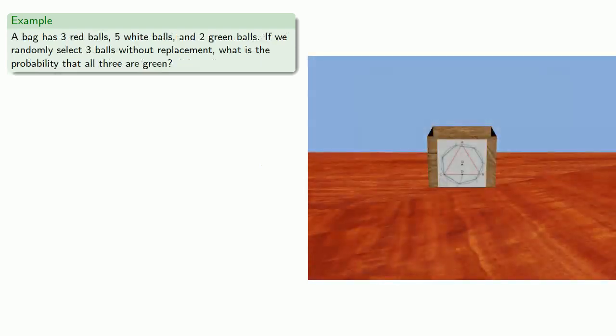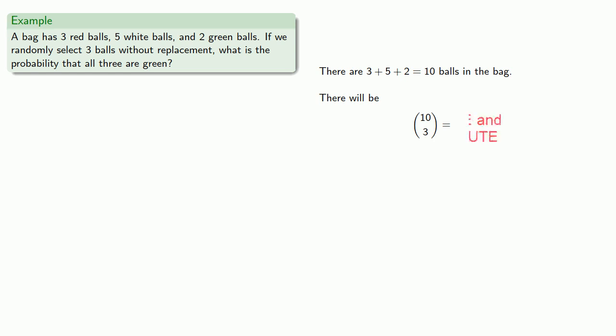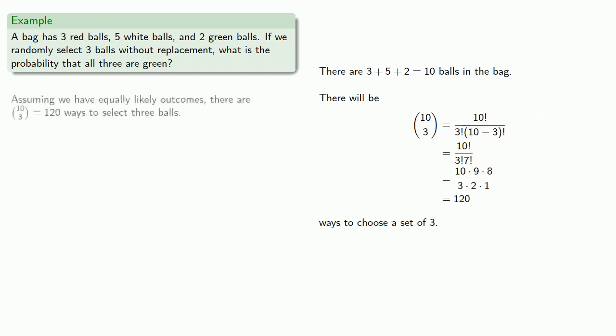So, suppose we have a bag with 3 red balls, 5 white balls, and 2 green balls. If we randomly select 3 balls without replacement, what is the probability that all 3 are green? There's 3 plus 5 plus 2 equals 10 balls in the bag, and if we're selecting 3 without replacement, that's 10 choose 3 ways to select them. Assuming we have equally likely outcomes, there are 120 ways to select 3 balls.